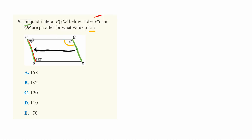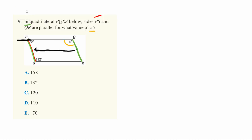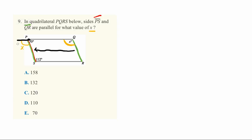We can also imagine extending the top line of our shape. With our shifted line and the extended top line, angle X is actually the exact same as this angle right here. This is really useful because we know what the whole angle is — this whole angle is 180 degrees, since it's a straight line.